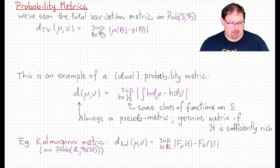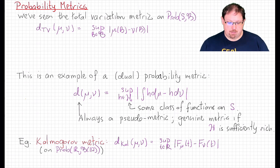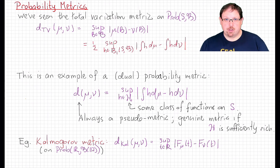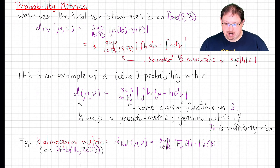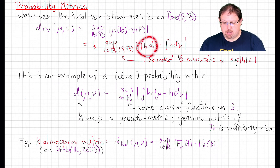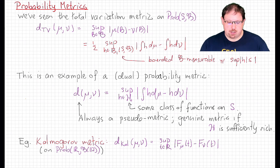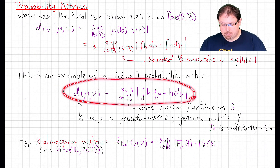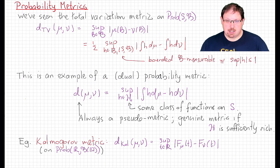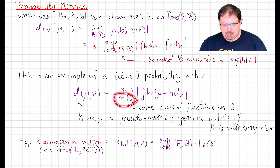But let's consider some other possible metrics that are of the same flavor. We should remember the following theorem proved in an earlier lecture: we could also express the total variation distance as the supremum over all bounded measurable functions h with supremum less than or equal to 1, of the difference between the integral of h dμ and the integral of h dν. That means total variation distance is an example of a dual probability metric.